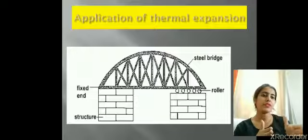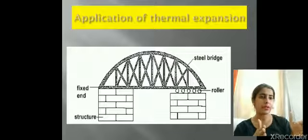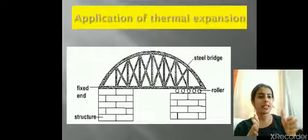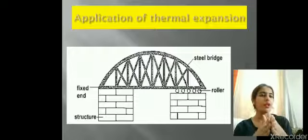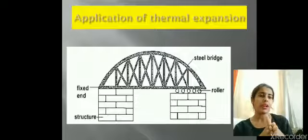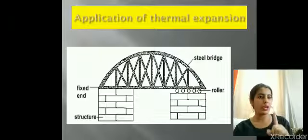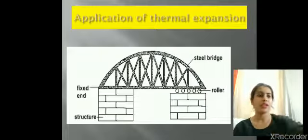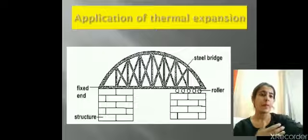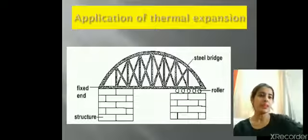So these rollers, they provide an additional space for the bridge to expand during the summers, and during the winters, they can again come back to the same position. So that is why steel bridges are provided with rollers but only at one end, not at both the ends. So this is an application of thermal expansion.